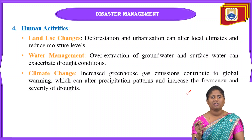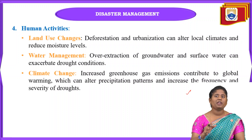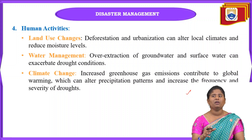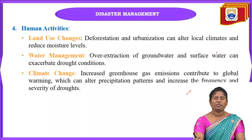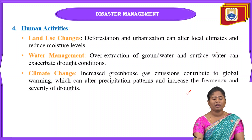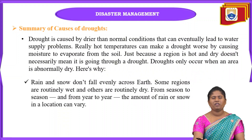Climate change is another major cause. Carbon dioxide released from factories and industries contributes to greenhouse gases, which drive global warming. Because of global warming, there are changes in precipitation levels as well, contributing to drought conditions.